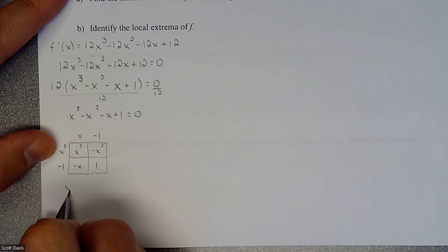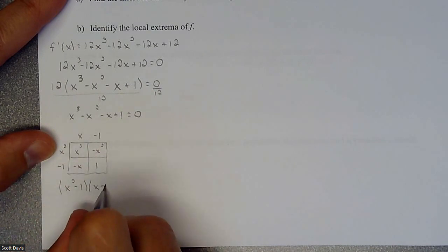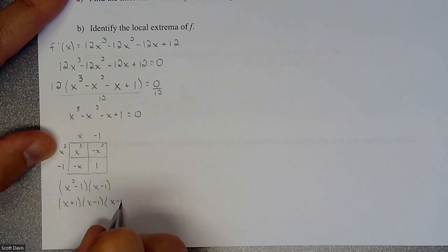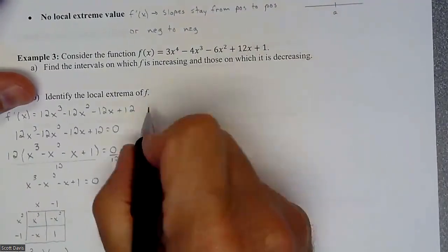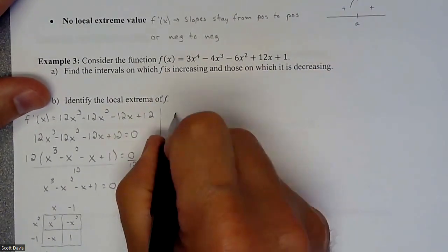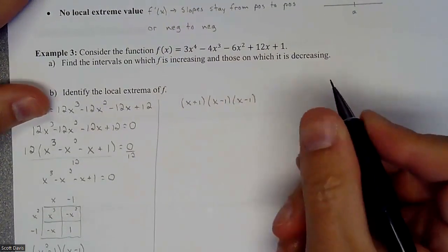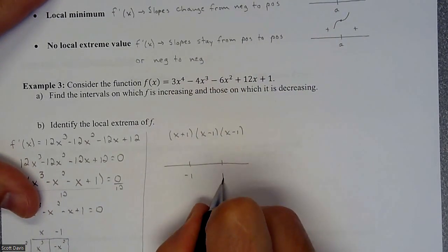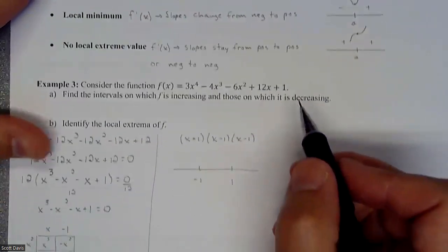So our factors are (x squared minus one) times (x minus one), and x squared minus one factors further into (x plus one)(x minus one). So we have (x+1)(x-1)(x-1), and our critical points are at x = negative one and x = positive one — with x = 1 being a repeated root. Now let's look at our slopes. Our critical numbers are negative one and positive one, and I'm going to test the slopes on either side to figure out where the function is increasing and decreasing — and whether we have maxes, mins, or a chair.